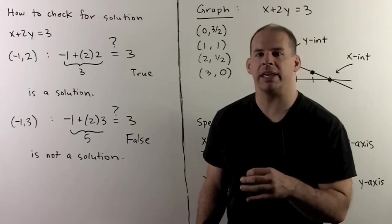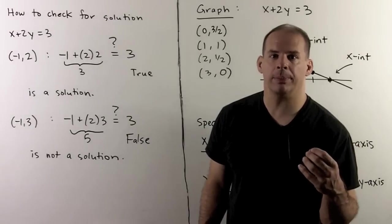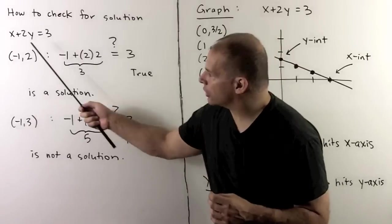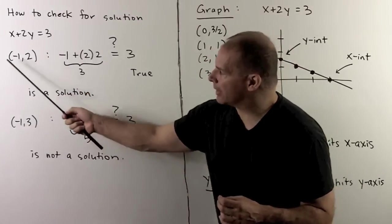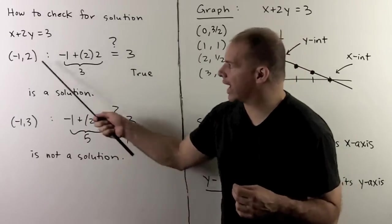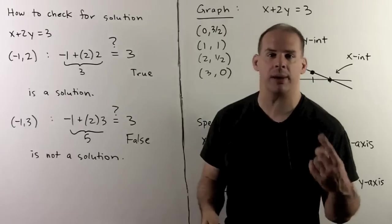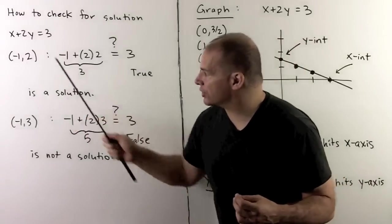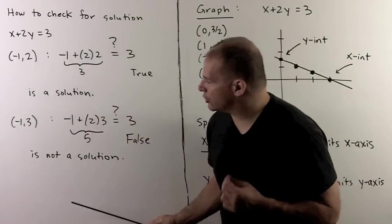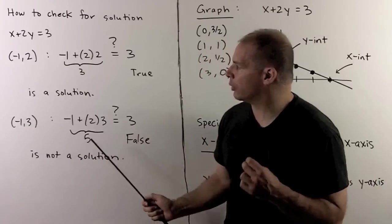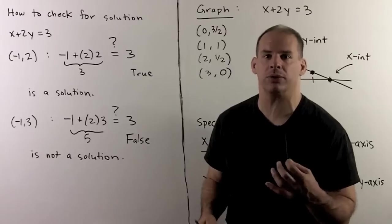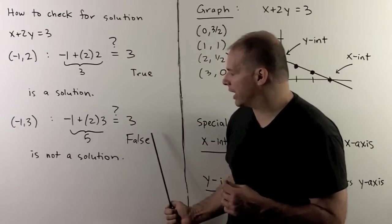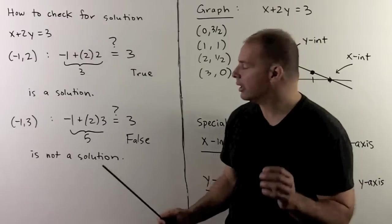To check whether a given point is a solution, put it into the equation and see if a true statement comes out. For x plus 2y equals 3, testing (-1, 2): -1 plus 2 times 2 equals 3, which is true, so it is a solution. Testing (-1, 3): -1 plus 2 times 3 gives 5, and 5 does not equal 3 — that's a false statement, so (-1, 3) is not a solution.